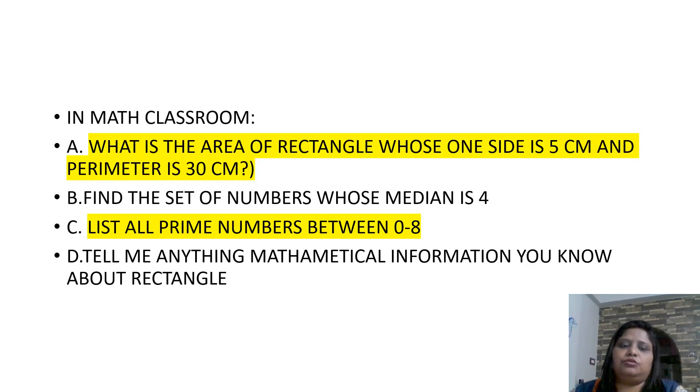In Math Classroom, which is important? That is, which questions are open-ended and closed-ended questions? What is the area of rectangle whose one side is 5 cm and perimeter is 30 cm? This is a closed-ended question. Open-ended question: find the set of numbers whose median is 4. That is, open-ended question.